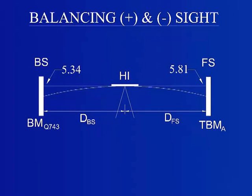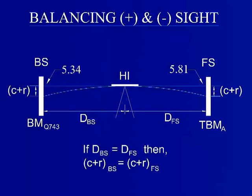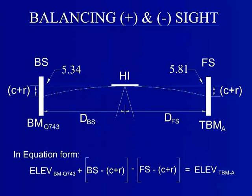Here, a back sight is taken to an established benchmark, BM Q743, and foresight taken to a temporary benchmark, TBM A. Regardless of the height of the instrument or rods at either location, if the distance between the instrument and BM Q743 is equal to the distance between the instrument and TBM A, then the correction for curvature and refraction for the two readings will cancel one another out and an accurate elevation can be found for TBM A.